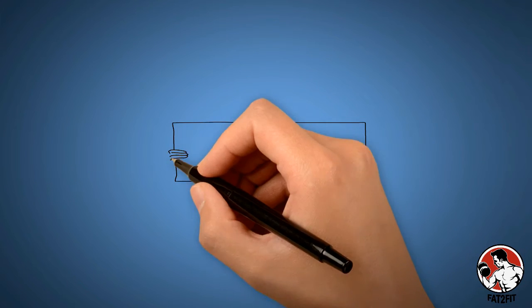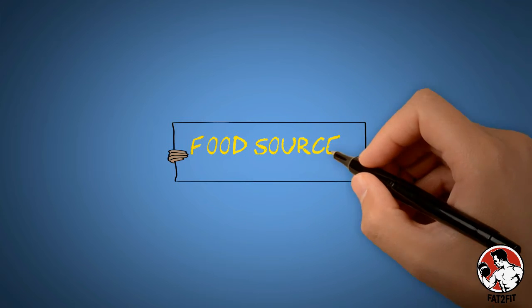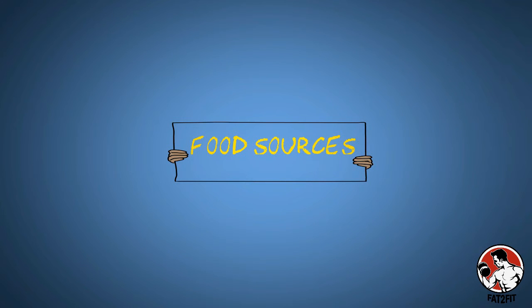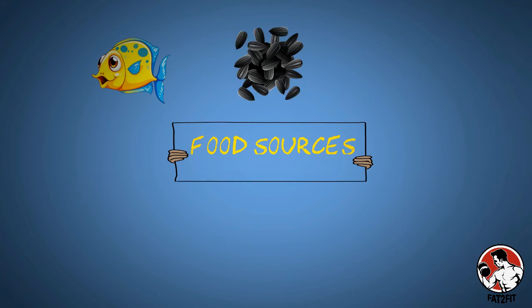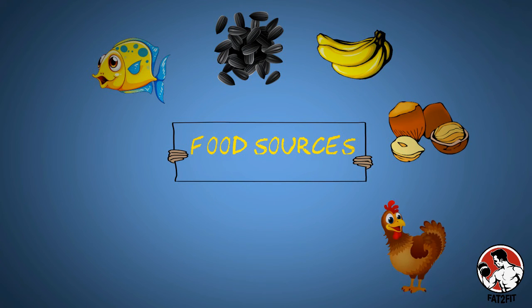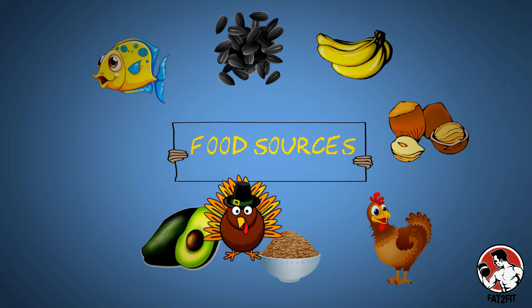Having said that, there are still many food sources that can replenish the three micronutrients in our body. To name a few: oysters, fish, sunflower seeds, bananas, spinach, nuts, chicken, brown rice, avocados, and turkey.